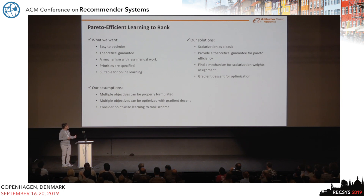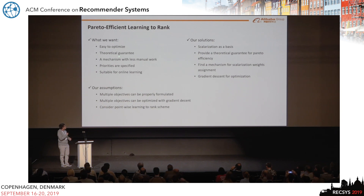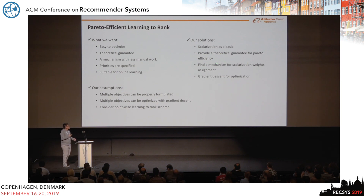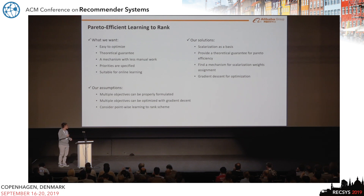Our solution aims to provide a mechanism that is easy to optimize with a direct theoretical guarantee. It requires less manual work, the priorities of objectives can be specified, and it is suitable for online learning. Our solution is based on the scalarization technique, but we provide a theoretical guarantee and find a mechanism for scalarization weight selection. We use gradient descent for optimization, which makes it suitable for online learning.